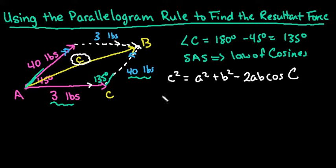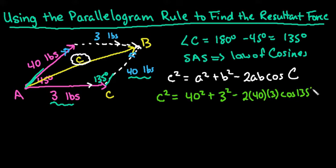Let's fill in the values. We don't know C squared. A would be the side opposite angle A, so that's 40. Plus B squared, which is 3. Minus 2 times 40 times 3, times cosine of 135 degrees.